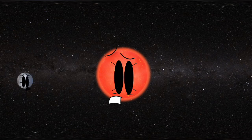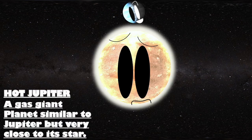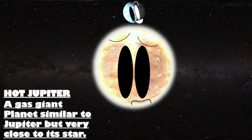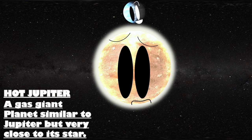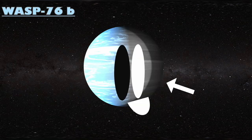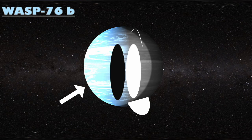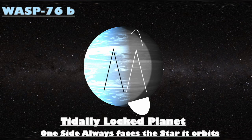I orbit my cool red dwarf star quietly in the constellation Scorpius. 1.8 days to orbit my star, a hot Jupiter gas giant, that's me. One side always day, one side always night. I'm a tidally locked planet, my name is WASP 76B.